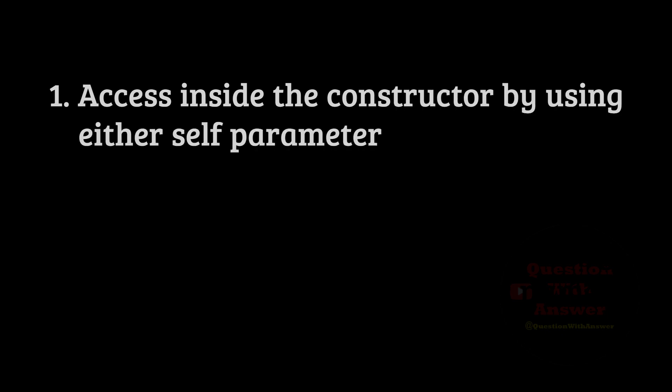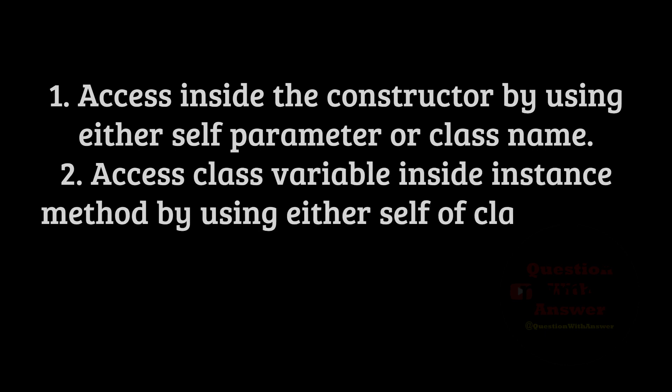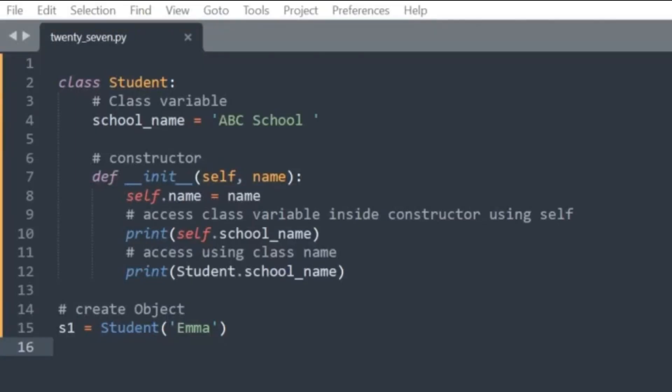One: Access inside the constructor by using either self parameter or class name. Two: Access class variable inside instance method by using either self or class name. Three: Access from outside of class by using either object reference or class name. In this example, we accessed the class variable school_name using class name and a self keyword inside a method.